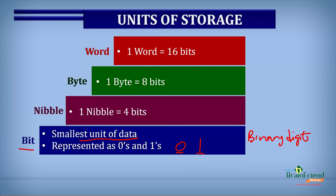Next, we have the nibble. A nibble is equal to four bits, meaning a combination of zeros and ones in any order. Four bits will give you one nibble.